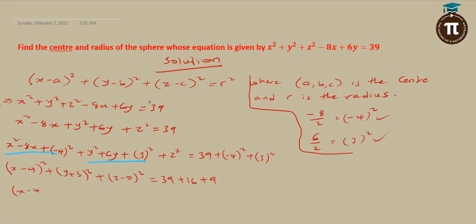We have x minus 4 all square plus y plus 3 all square plus z minus 0 all square equals... 16 plus 9 gives me 25. 25 plus 39 gives me 64. 64 is obviously equal to 8 squared.